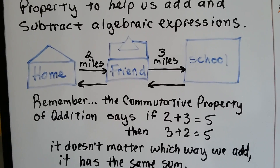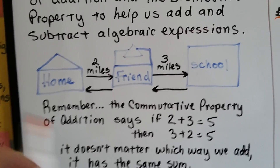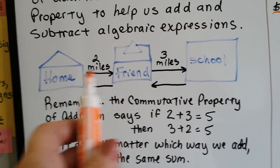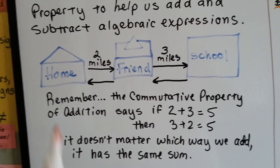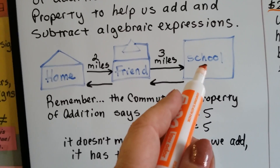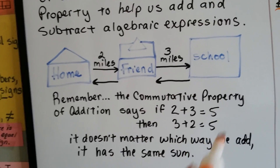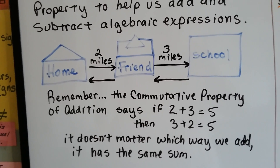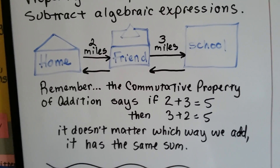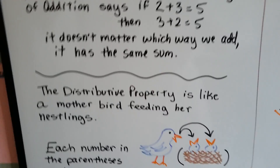If you're at home and you go two miles to a friend's house and then three miles to school, it's the same distance as going three miles to your friend's house and then back two miles home — they're both five miles. The commutative property is like a commute to school or to work and then the commute home. Two plus three equals five, just like three plus two equals five; it doesn't matter which way we add, it has the same sum.